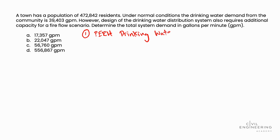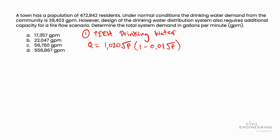we see there is an equation called the National Board of Fire Underwriters Equation. That equation is: Q (flow rate) = 1,020 × √P × (1 − 0.01 × √P). We need to be careful here because P in this case is population, but it's in thousands. So we need to be careful about that.